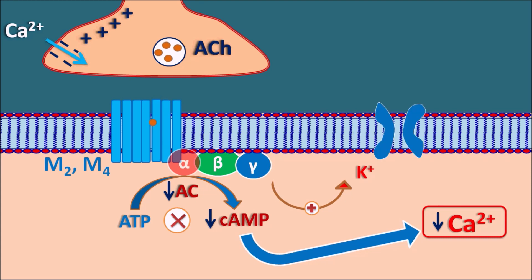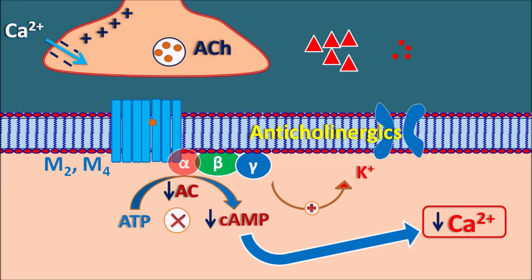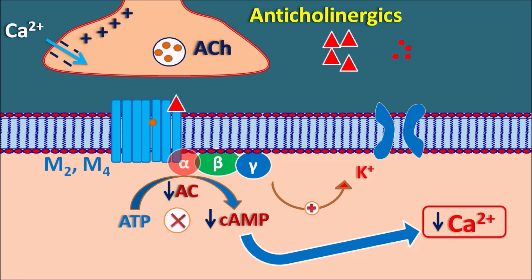These potassium channels are outward-going, so potassium goes outside, resulting in hyperpolarization. In this way M2 and M4 receptors mainly produce the inhibitory response. The anticholinergics can block M2 or M4 receptors, thereby preventing the inhibitory response produced by acetylcholine.